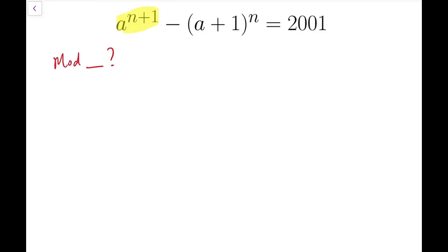As we are dealing with powers, and the indices are also variables, the simplest things we can get are either 0, 1, or minus 1. To get these, we can try mod a or mod a plus 1. So let's see what will happen if we take mod on these two numbers.